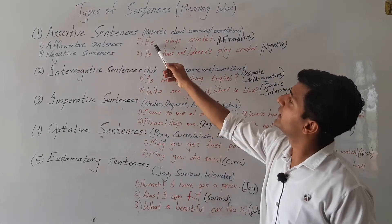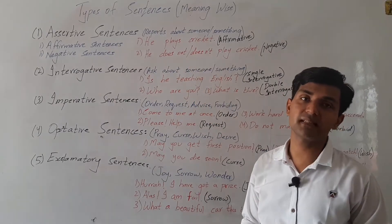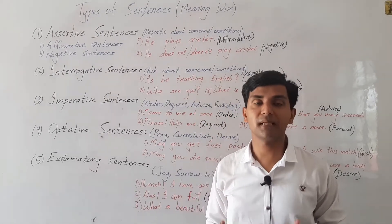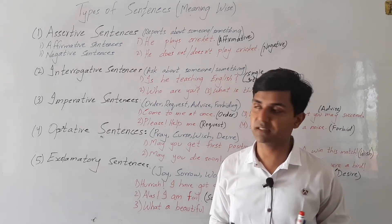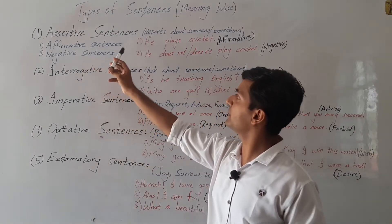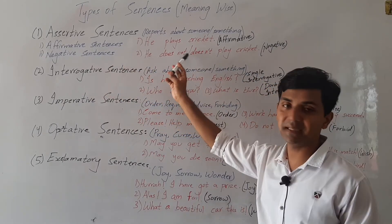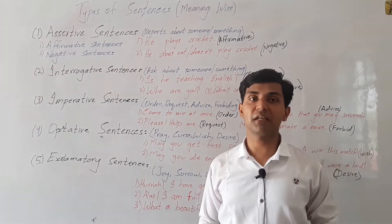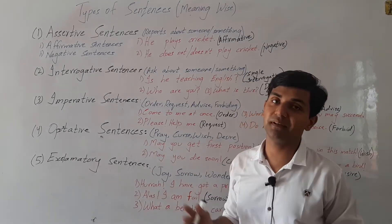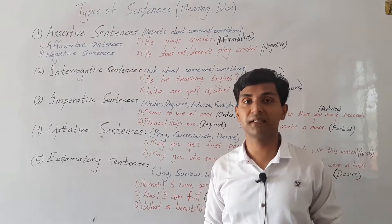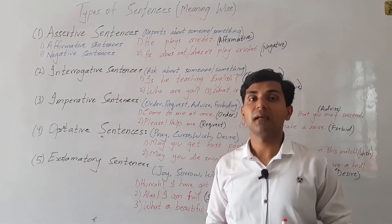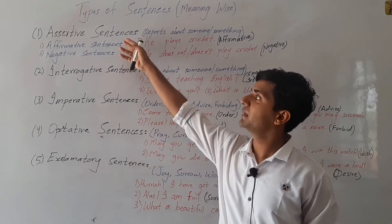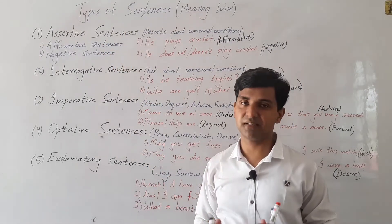So here we have two examples. 'He plays cricket' — it's an affirmative sentence, a positive sentence. It's reporting about a person who plays cricket; his activity is playing cricket. Then we have another example: 'He does not play cricket.' Here is a negative sentence — it's telling about negation of an activity. It tells us that the activity of playing cricket is not done by that person.